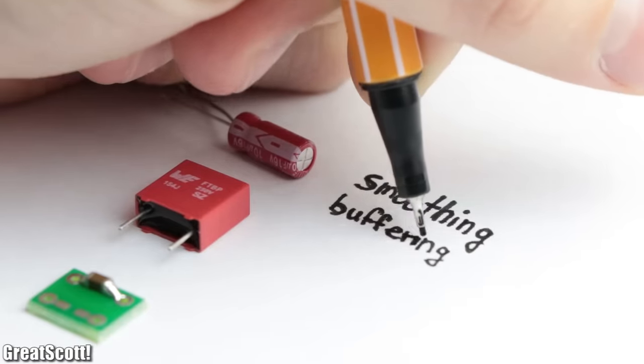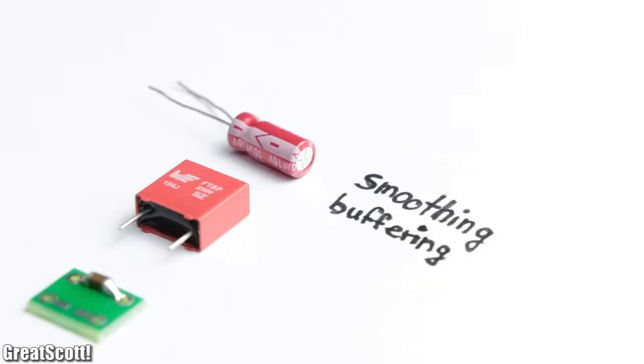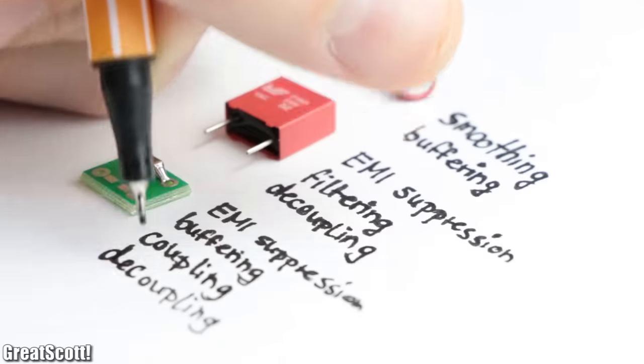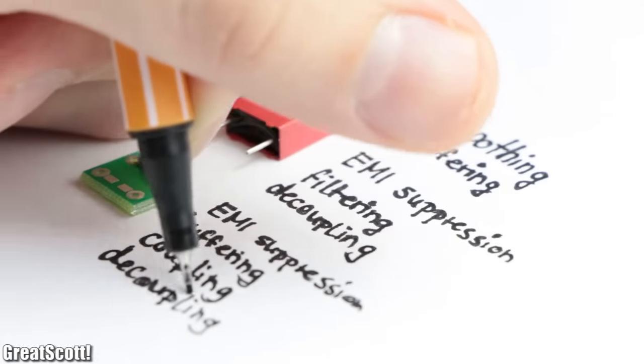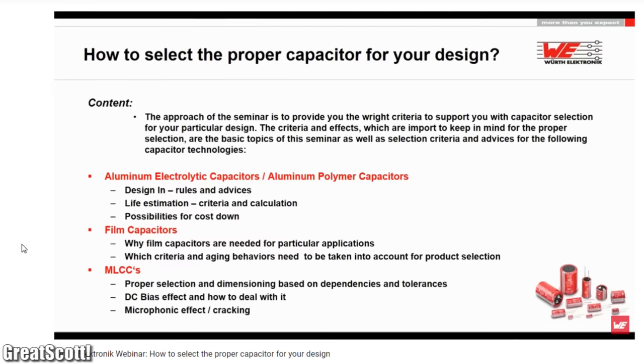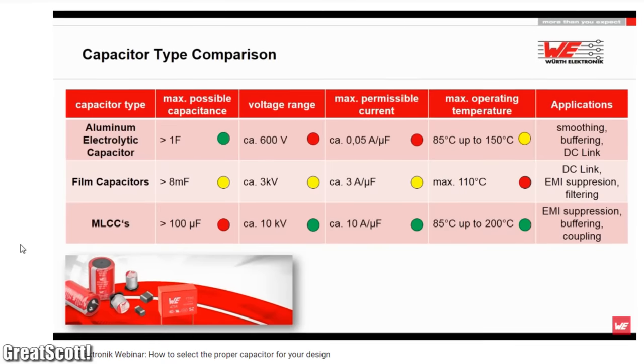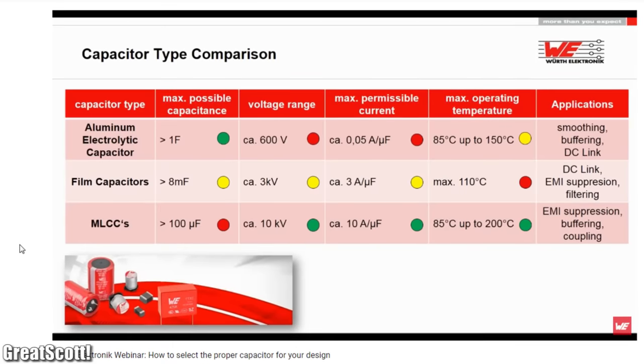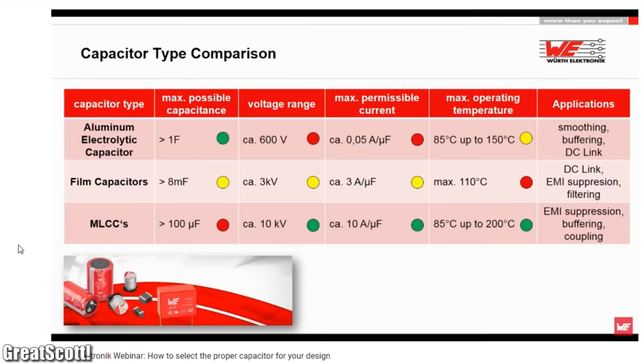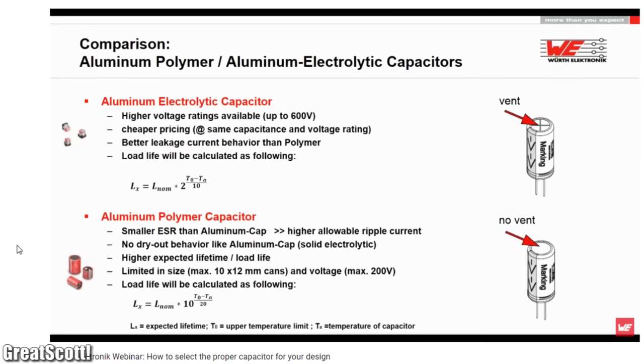But you should now understand that while electrolytic capacitors can be used for buffering energy, which is why you see them often in power supplies, they are generally not well suited for higher frequency filters or decoupling. And if you want more information about other applications of capacitors and the usage of different capacitor types in general, then I highly recommend having a look at the webinar of the Würth Electronic Eisos group, which you can find in the video description.